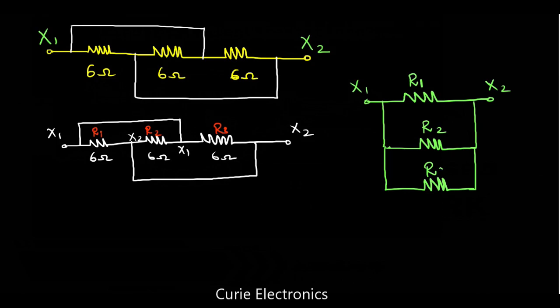R3. Now, you know what are the values of these resistors. So, three resistors, R1, R2, R3 equal to 6 ohm. So, what is R equivalent?